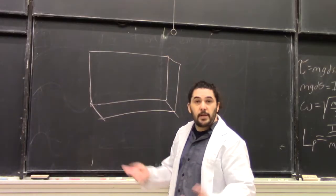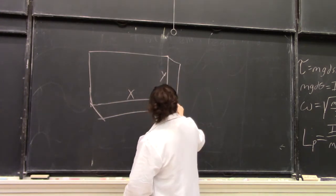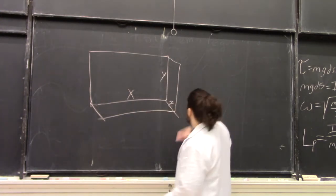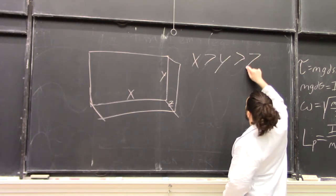So we'll call the three sides of the rectangular solid x, y, and z, such that x is larger than y, which is larger than z.